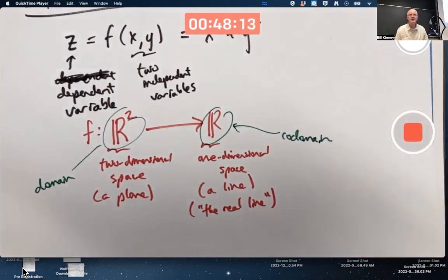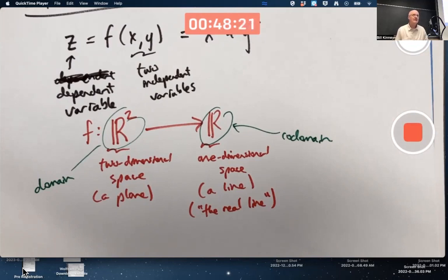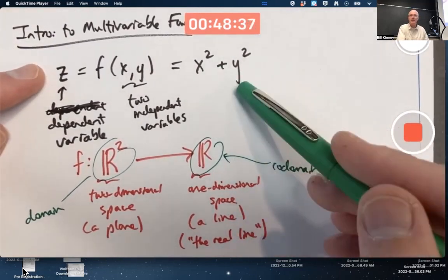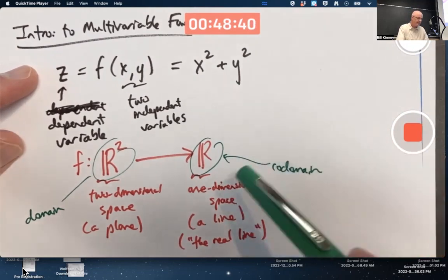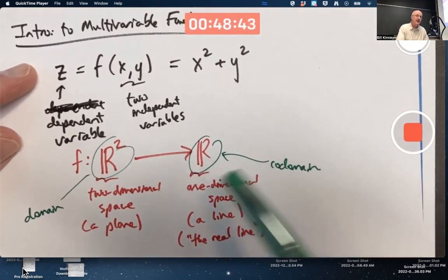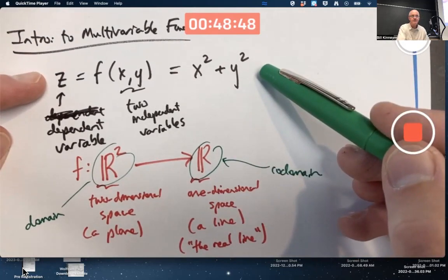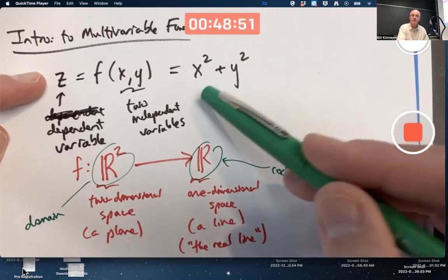When you write this R over here, I like to call this the co-domain. Now, maybe you've never had a teacher who's ever labeled something the co-domain. That's a word I like using. Some people use the word range, but I think that's a little bit misleading based on how you've heard the word range in the past as the set of all possible outputs of a function. And in fact, this function, if X and Y are real numbers, never has negative outputs.